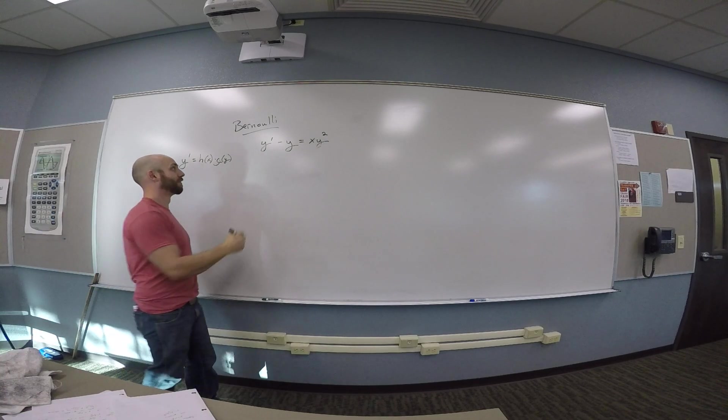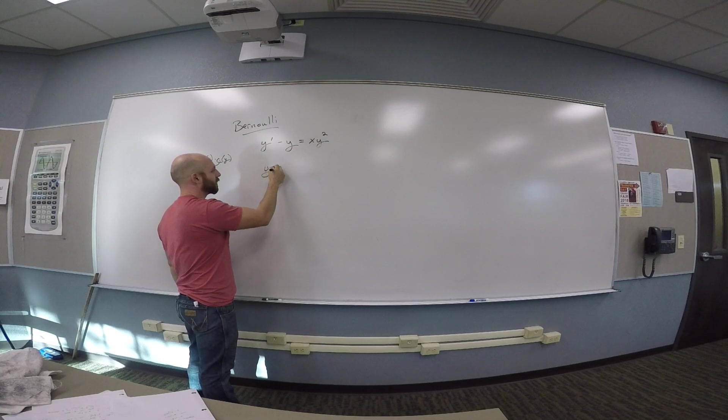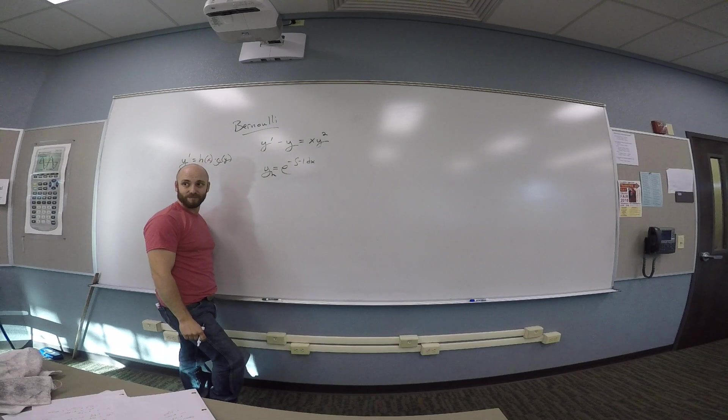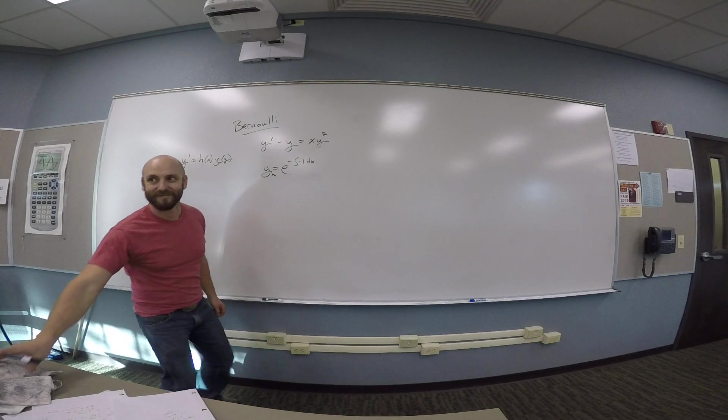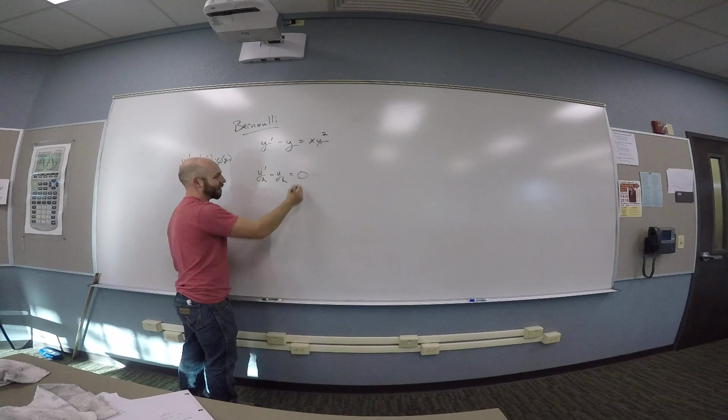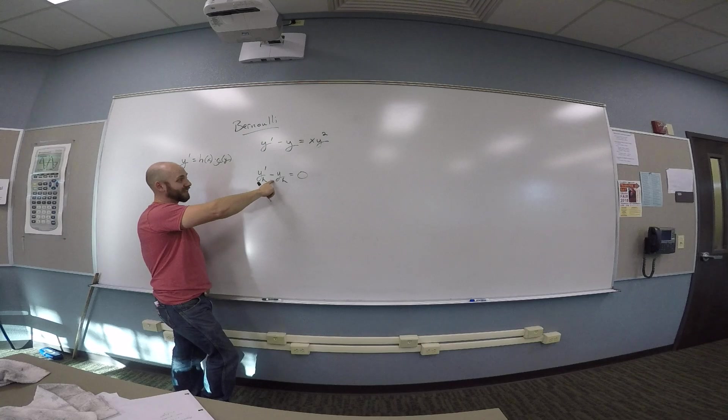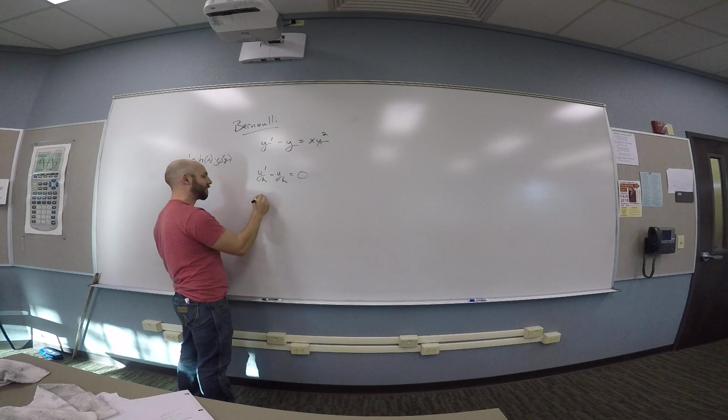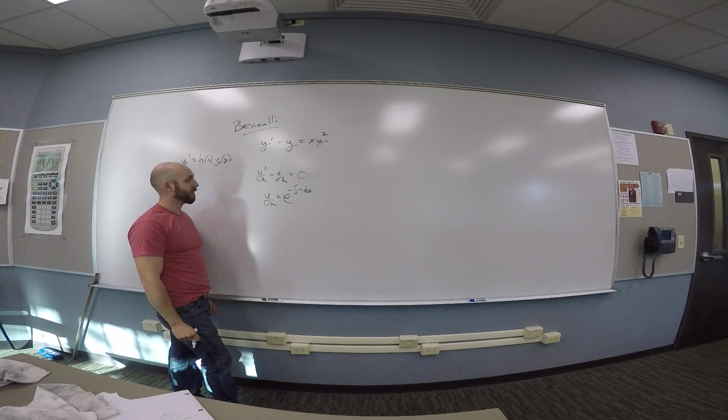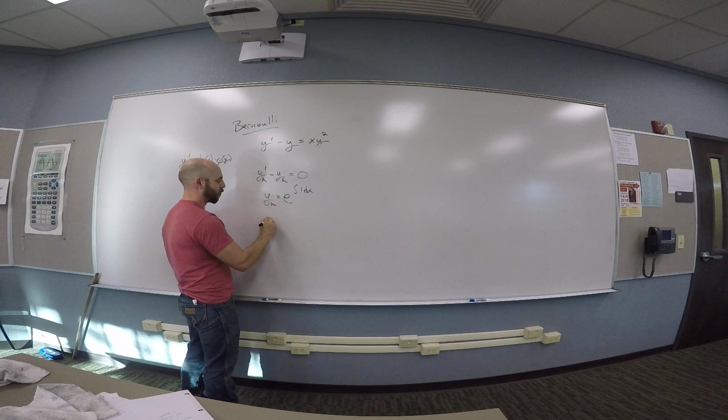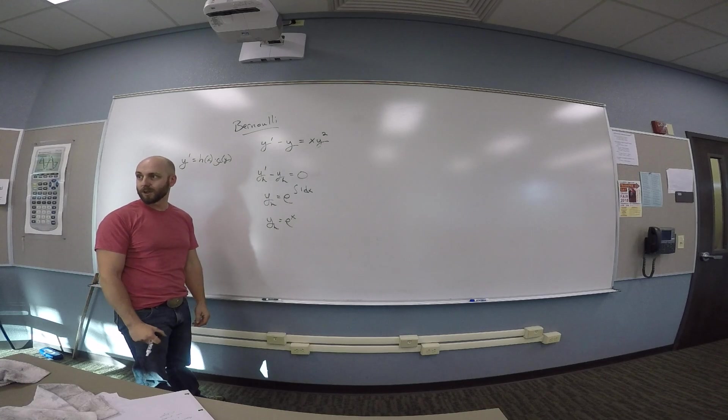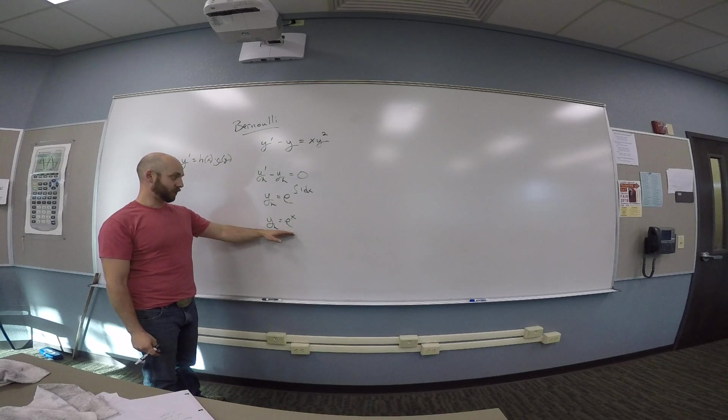Okay, so to solve a Bernoulli equation, you solve the homogenous one. So your yh is e to the minus integral of minus 1 dx. So the homogenous version is yh prime minus yh equals 0. And then, in this case, p is minus 1. So yh is e to the minus integral of minus 1 dx. You get a double negative. So yh is e to the x. You don't need the constant here because your intention is to do variation of parameters, so you're going to get a constant later. So this is your homogenous solution.